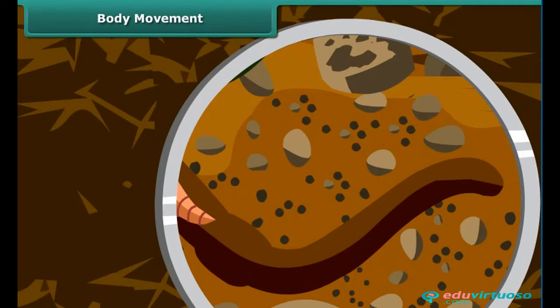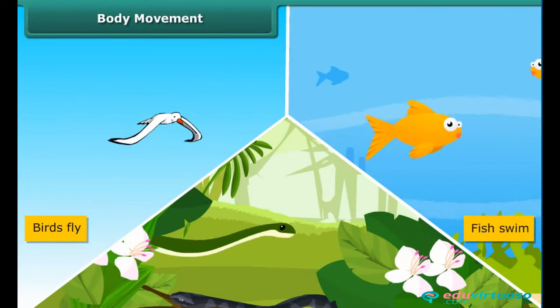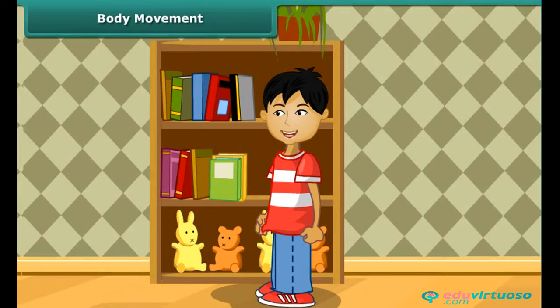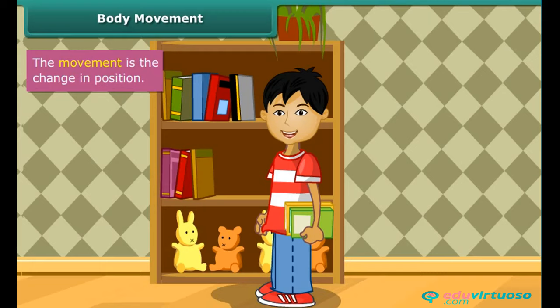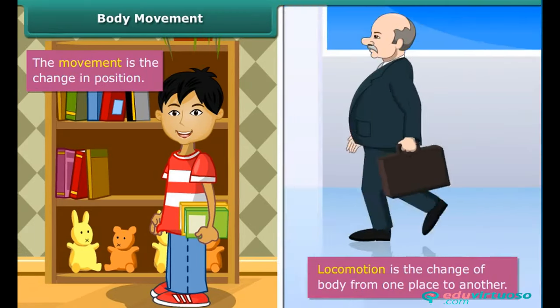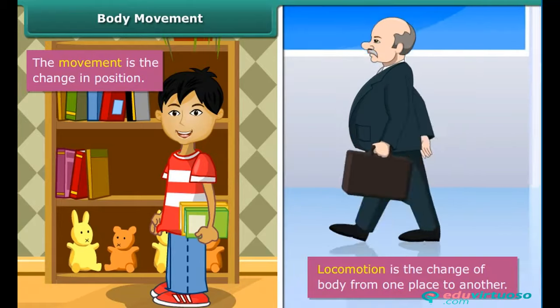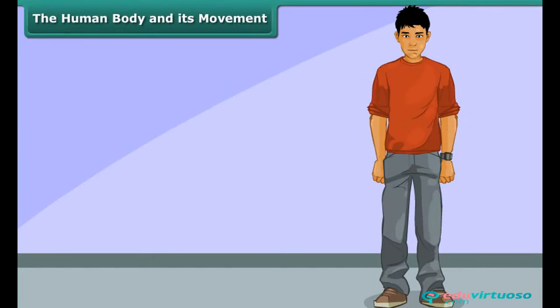As we walk or run, earthworms creep or crawl. Birds fly, fish swims, snakes slither. Other than these movements, we can also see that we move various parts of our body, like when we pick up a book, we move our hand. Movement is the change in position, while locomotion is the change of the body from one place to another.